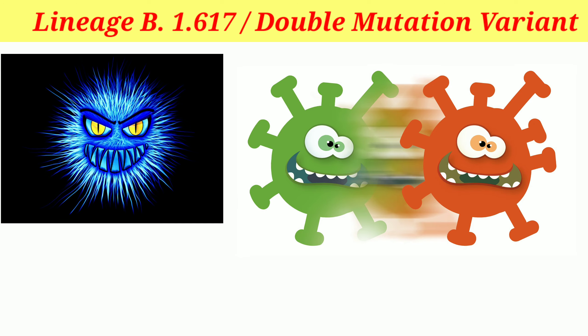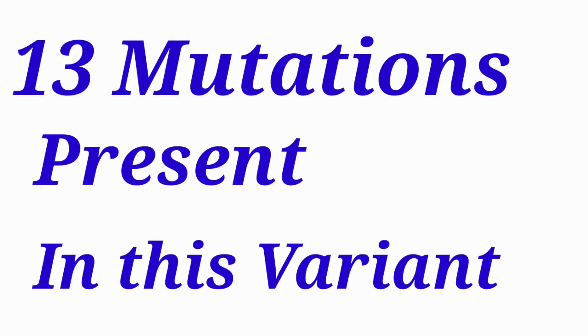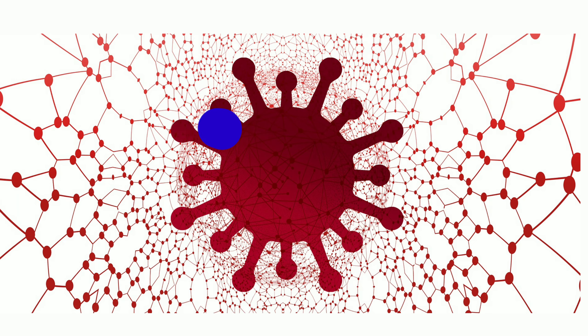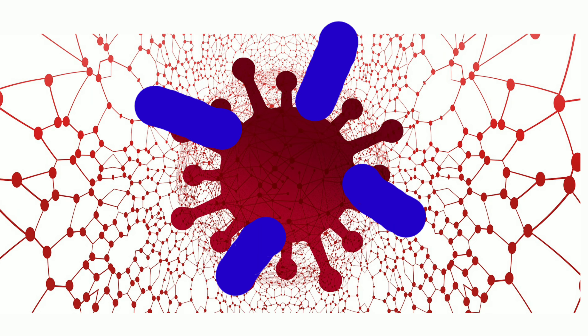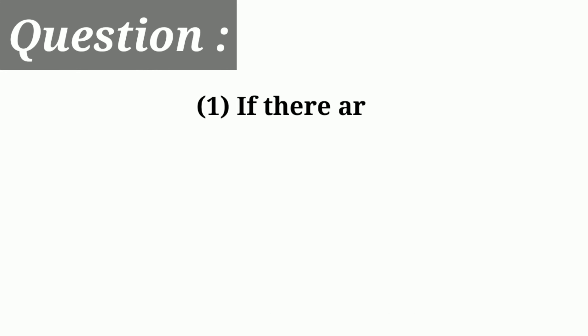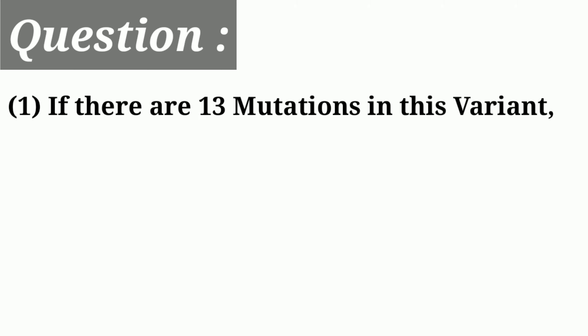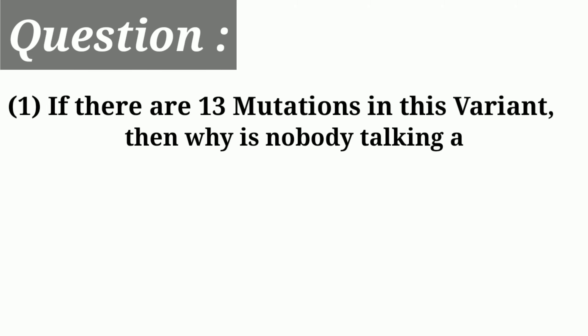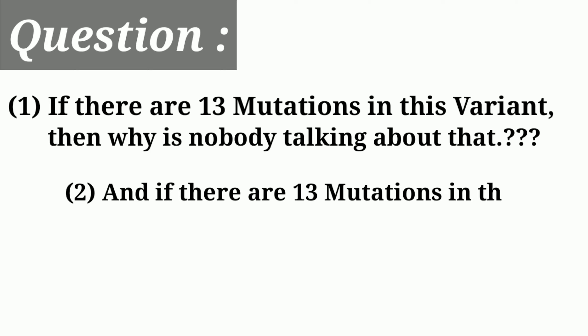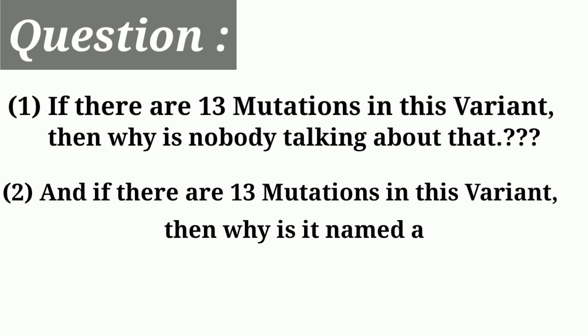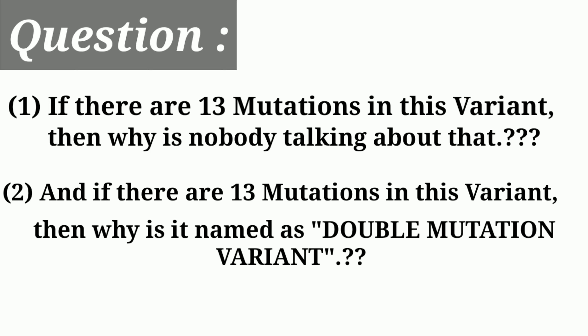You might think that there are only two mutations present in this variant, but that's not totally true. There are a total of 13 mutations present in this variant, out of which four mutations are present on the spike proteins of this virus. So you might think: if there are 13 mutations in this variant, then why is nobody talking about that, and why is it named as the double mutation variant?